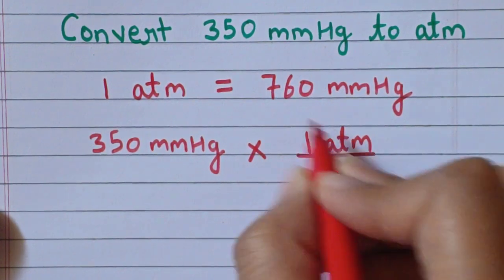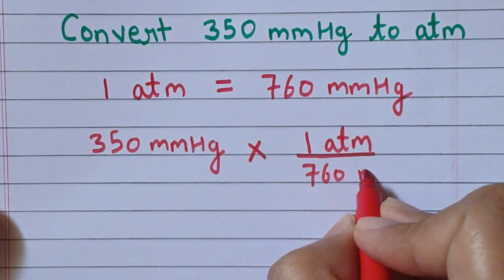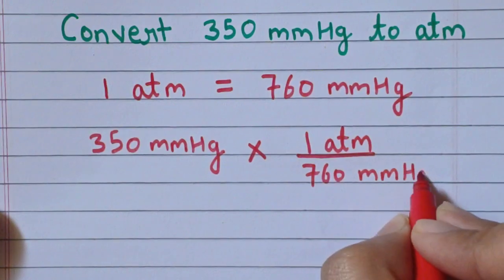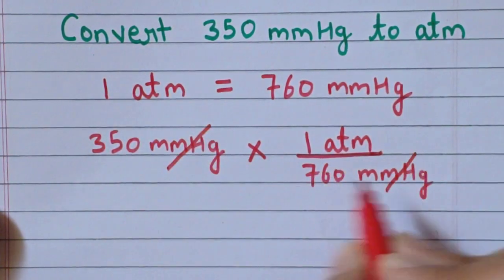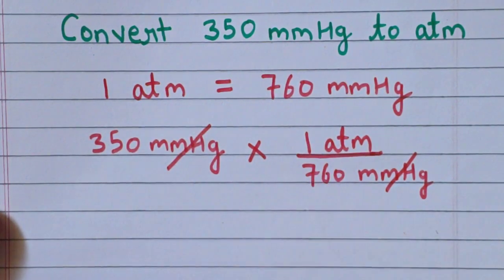divide by 760 millimeter of mercury. So this unit will cancel out. Now we will divide here 350 divide by 760.